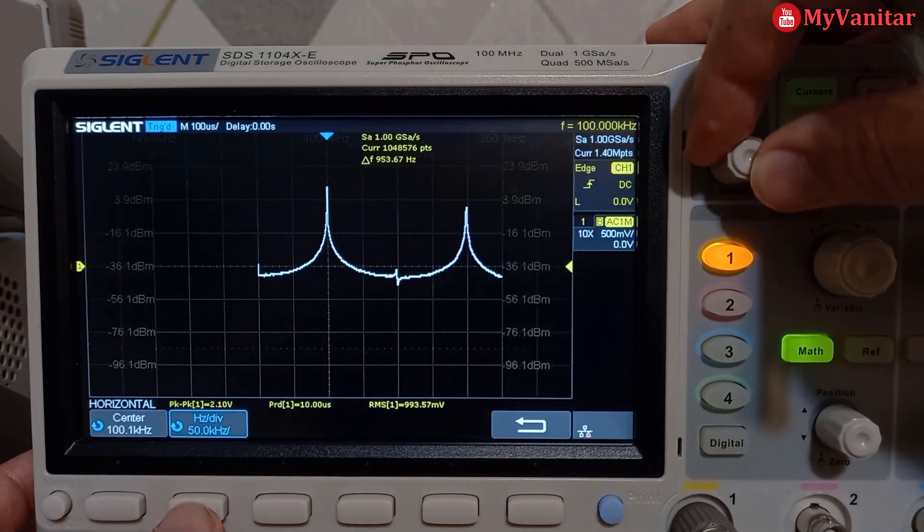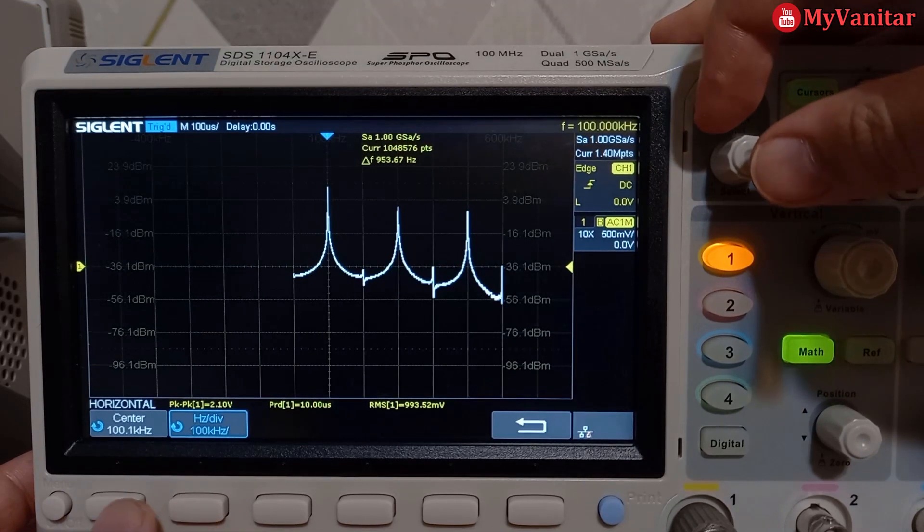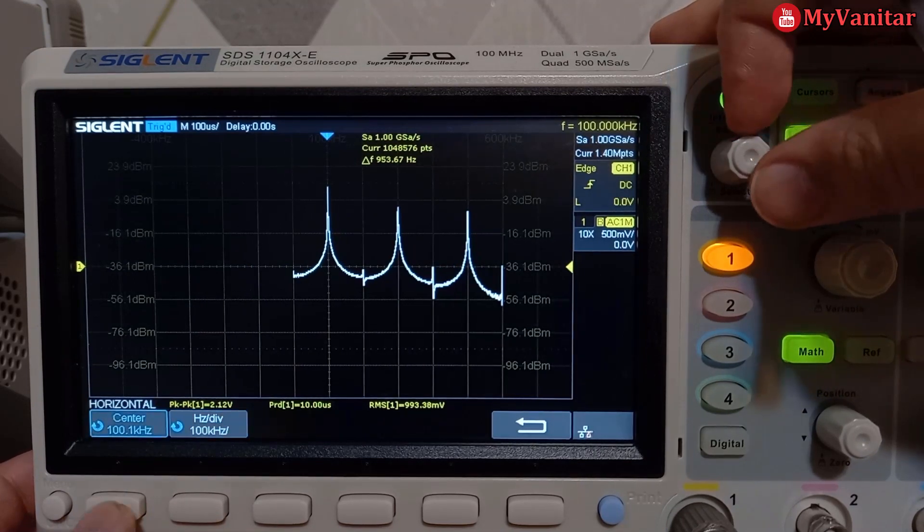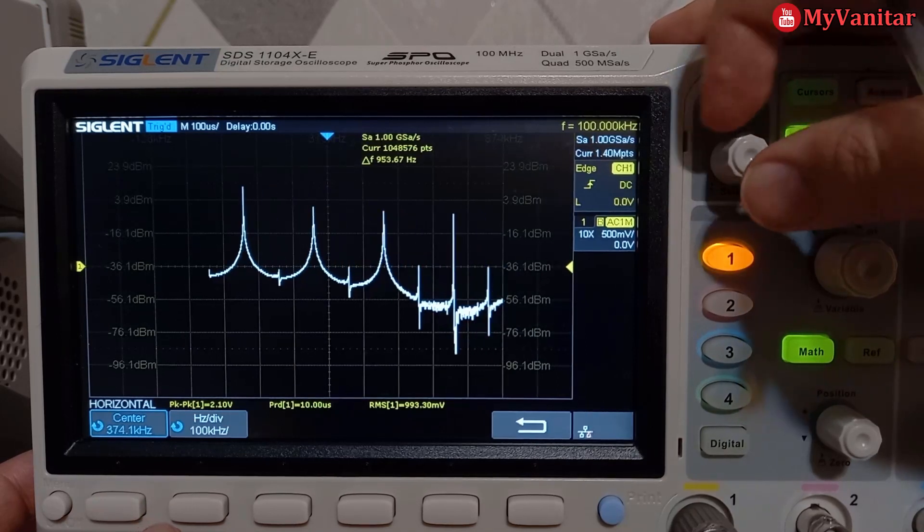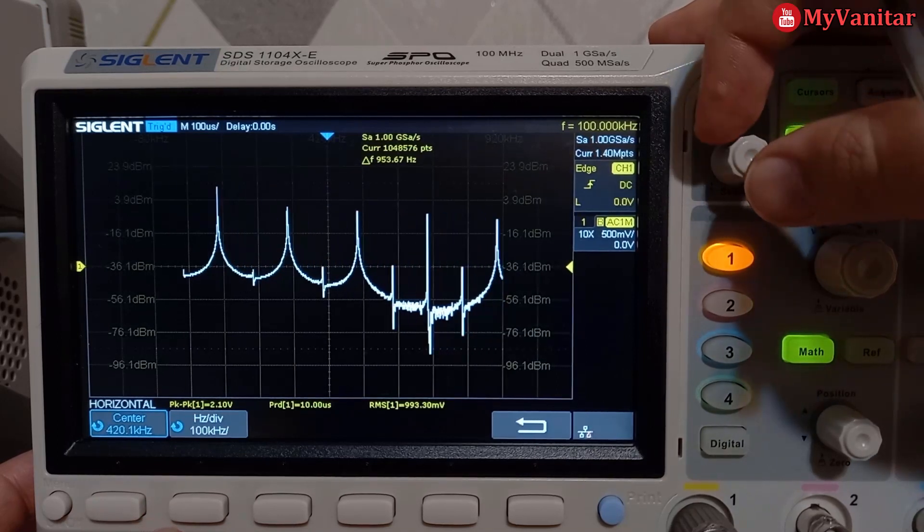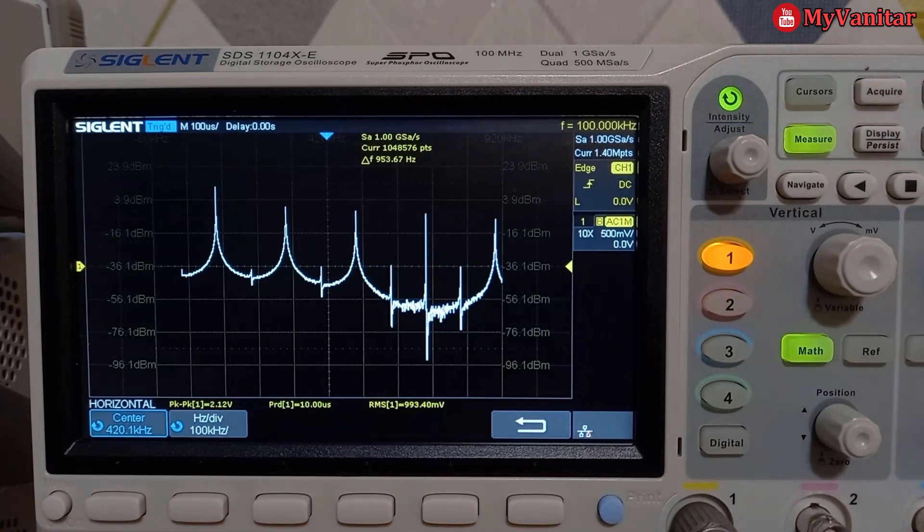Let me change this to 100 hertz per division and shift this to the left so you can see the major peak and the high frequency harmonics.